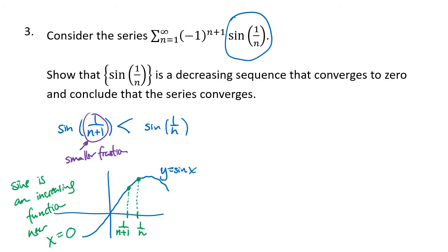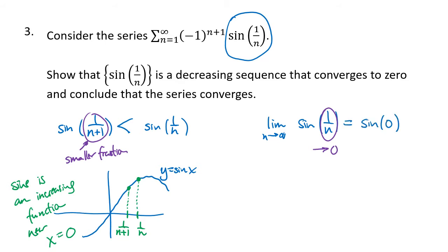It's a little more complicated, but the same result. For the limit as n goes to infinity of sine of 1 over n: as n goes to infinity, 1 over n goes to zero, and since sine is a continuous function, this limit equals sine of zero, which is zero. So we get the two things we need, and this series converges by the alternating series test.